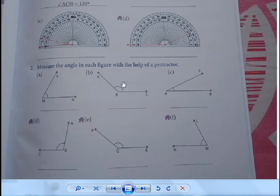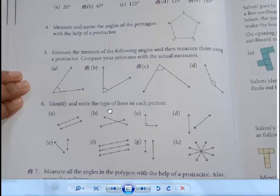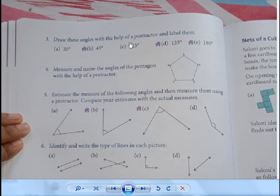So acute angle is less than 90, obtuse. So draw these angles with the help of protractor and label them.